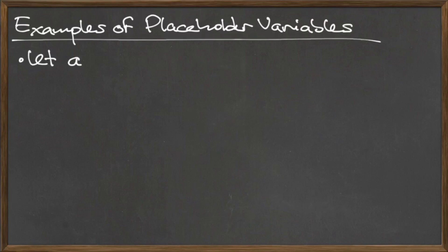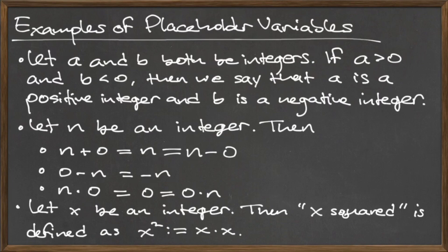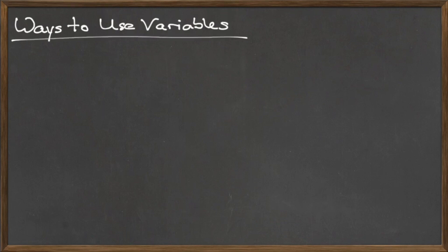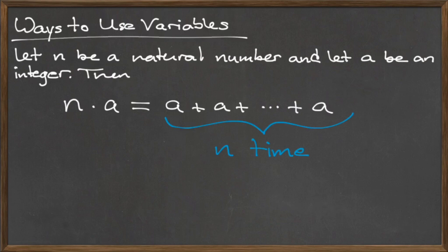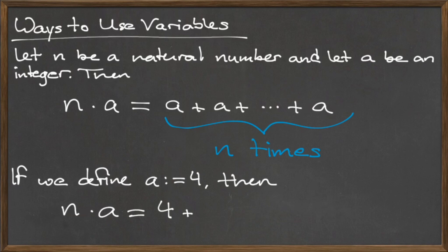Here are some examples of mathematical properties that can be expressed using variables as placeholders. Like we saw in the previous slide, we can use variables to define certain mathematical ideas. For example, let's define multiplication using variables. Let n be a natural number and let a be an integer. Then the multiplication of n times a is equal to adding a to itself n times. If we assign the value of 4 to a, then n times a is 4 added to itself n times.